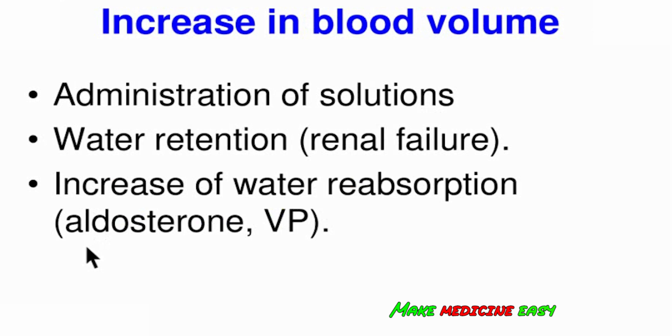An increase in blood volume can lead to arterial hypertension. For example, administration of intravenous solutions can lead to arterial hypertension because of increased total blood volume. But this is for a short period of time, because due to kidney filtration, reabsorption, and secretion mechanisms, the volume will be restored to normal and blood pressure will be normalized.